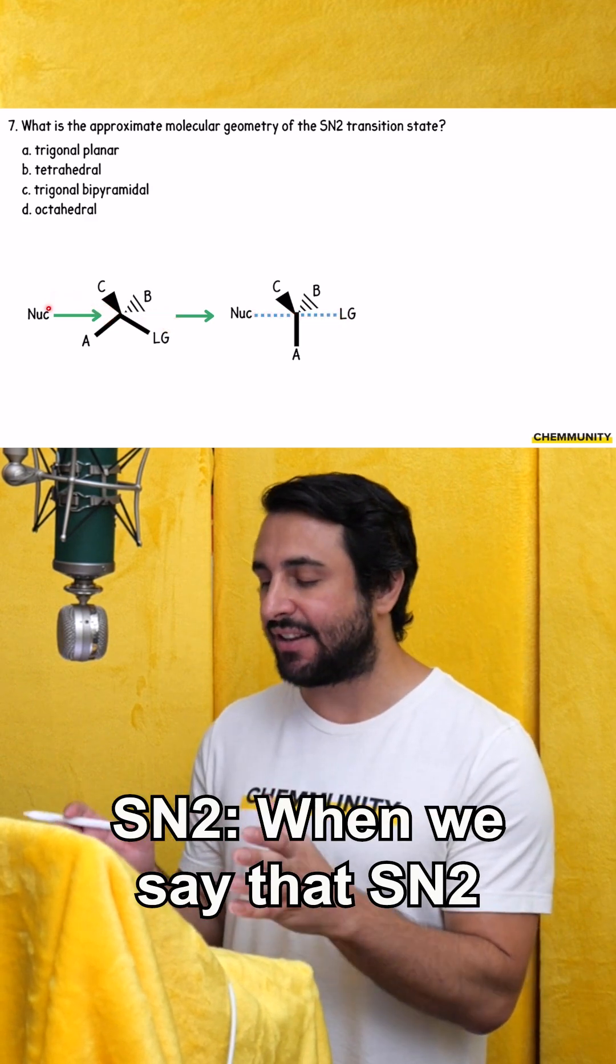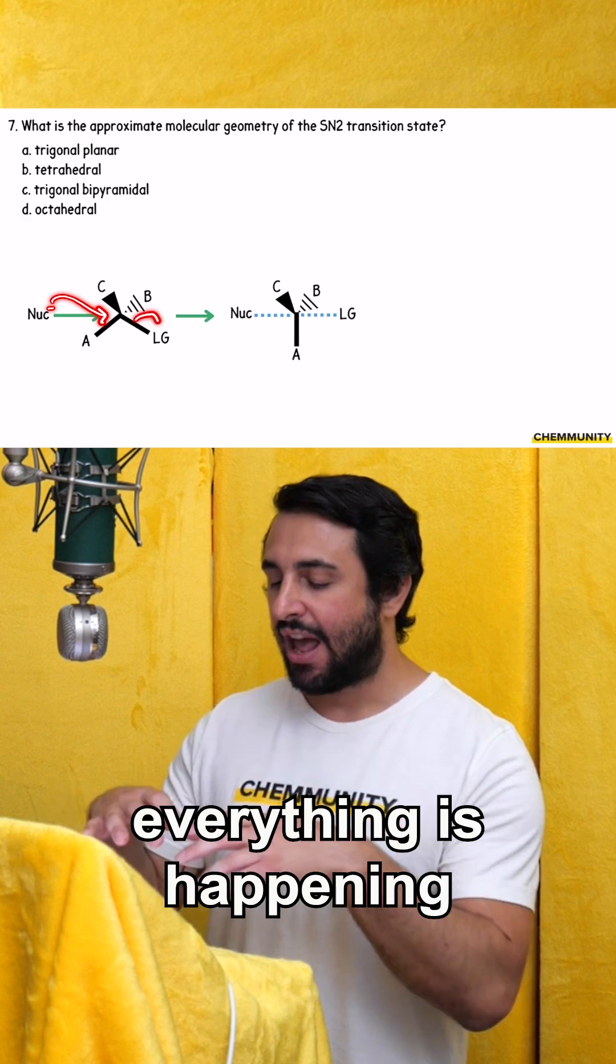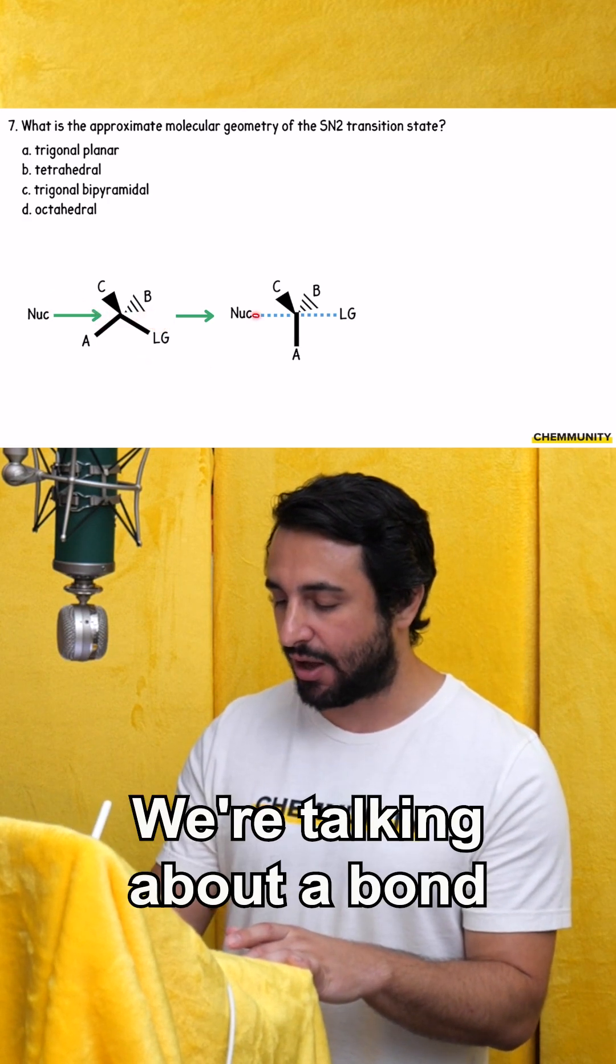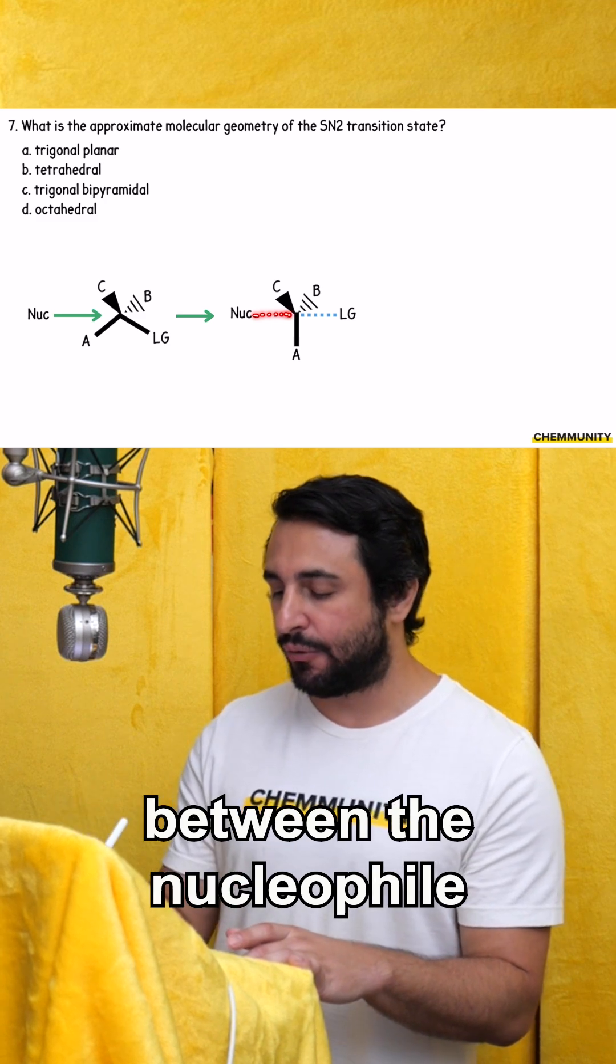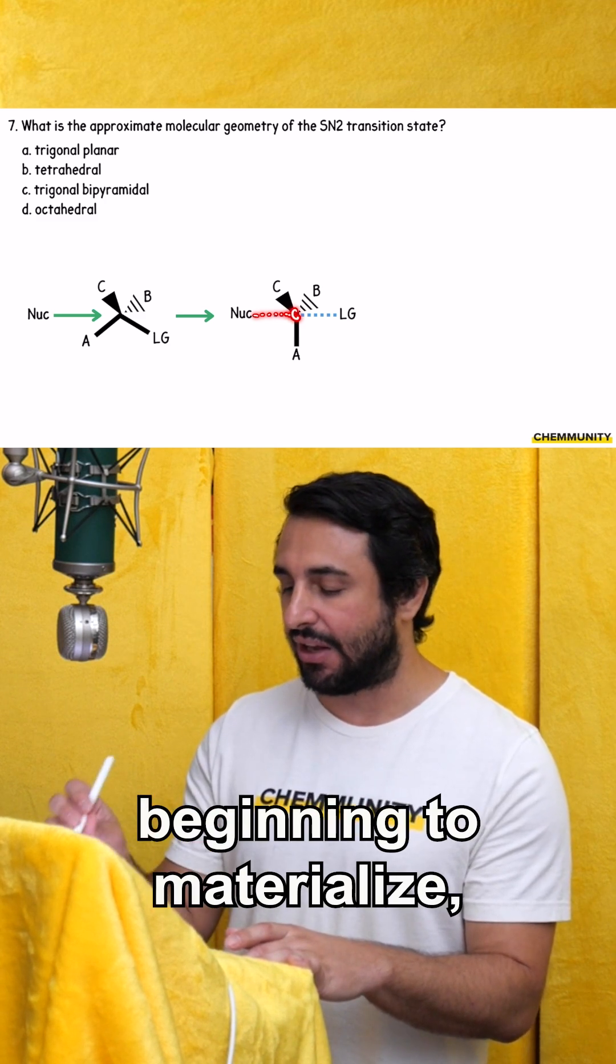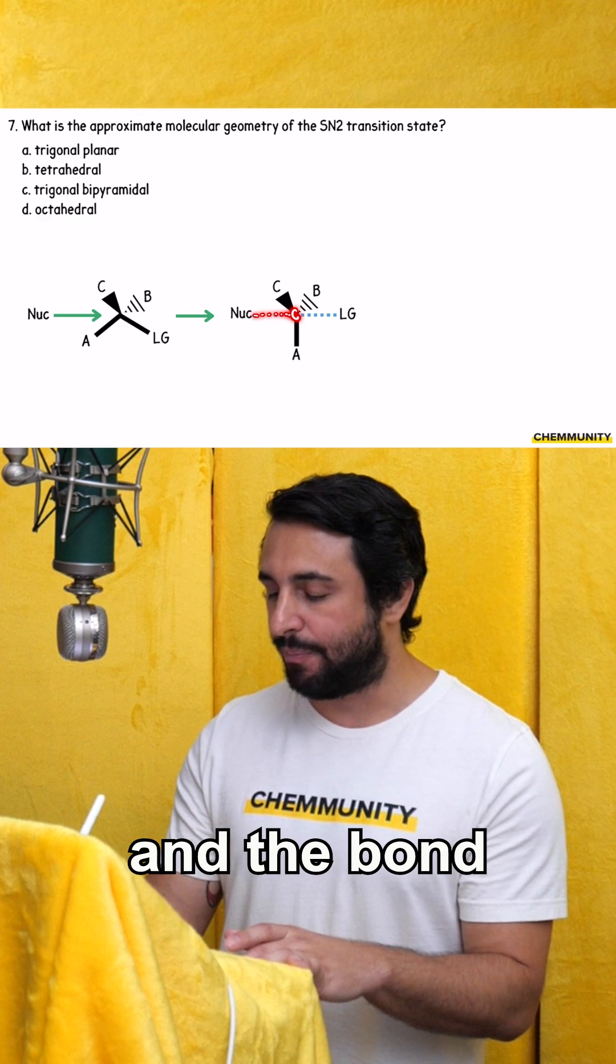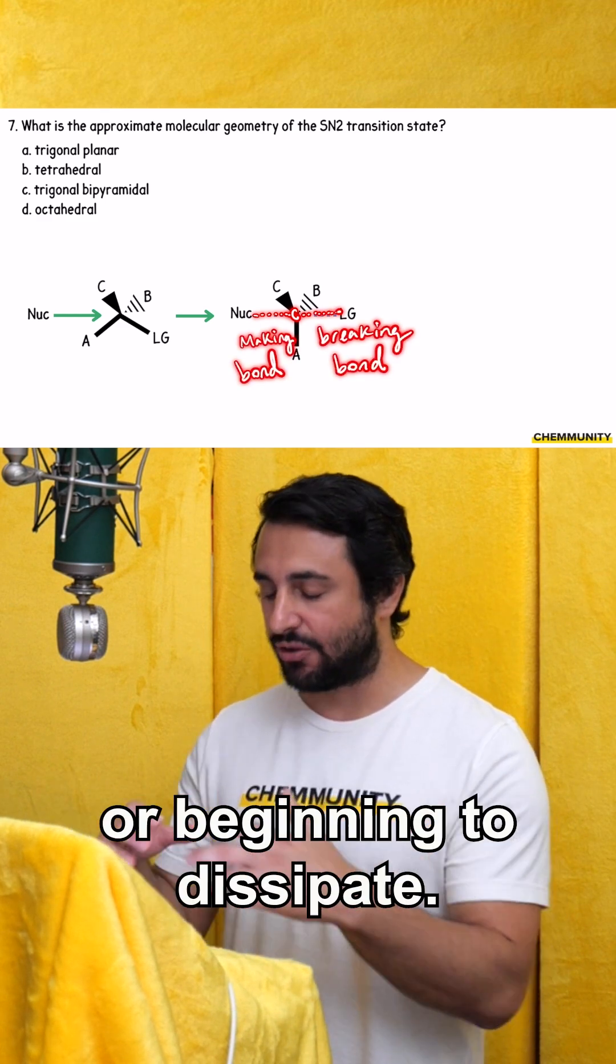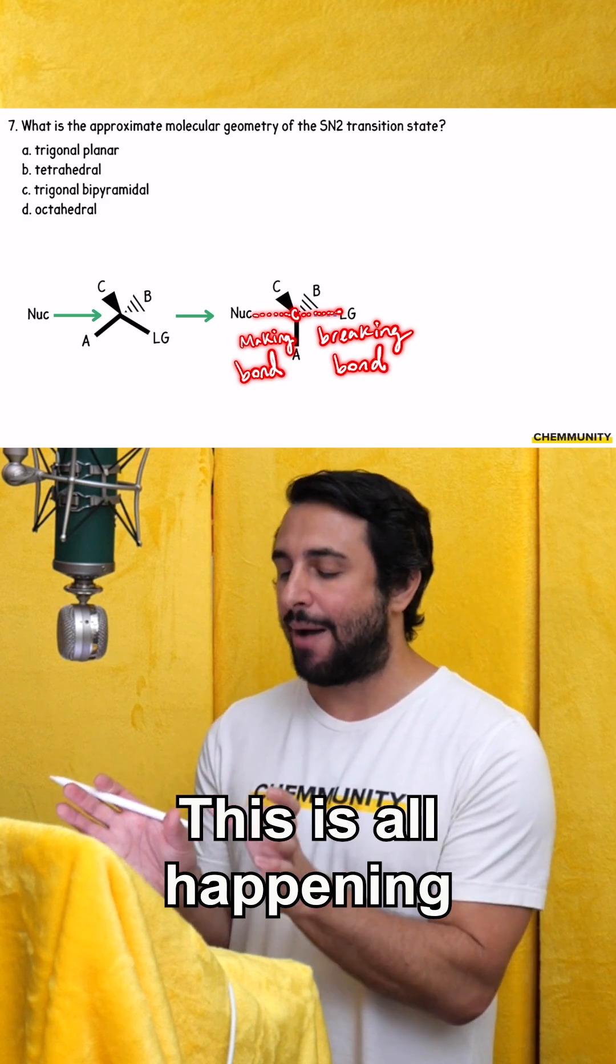SN2, when we say that SN2 is a concerted reaction, everything is happening in one step. This is what we're talking about. We're talking about a bond between the nucleophile and that central carbon beginning to materialize and the bond from that carbon to the leaving group beginning to dematerialize or beginning to dissipate. This is all happening at the same time.